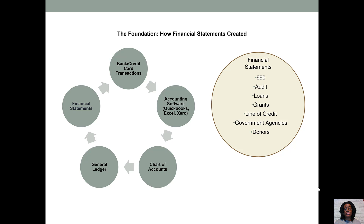When we think about financial statements, it first starts off with your bank and credit card transactions. Those transactions flow into your accounting software, whether that be QuickBooks or an Excel spreadsheet. Those transactions are then flowed into a chart of accounts, which is a list of accounts that store your transactions. Those accounts are then put on a general ledger, which is similar to our own personal checkbook. The general ledger includes the account, the date, possible vendor, and the amount. That general ledger, which includes all of those transactions, flows into the financial statements.